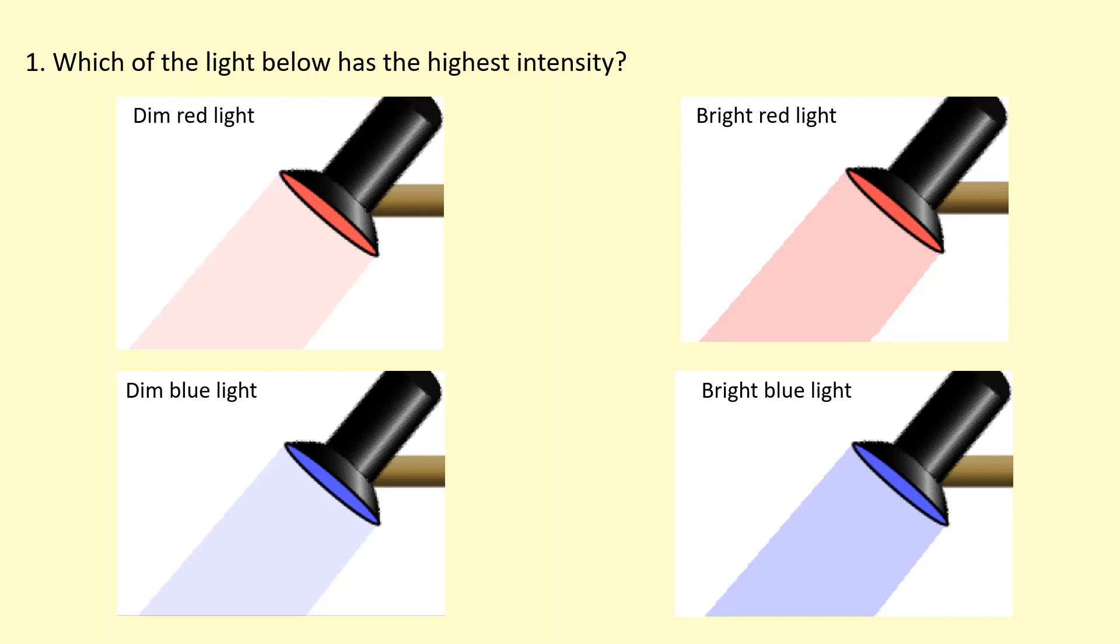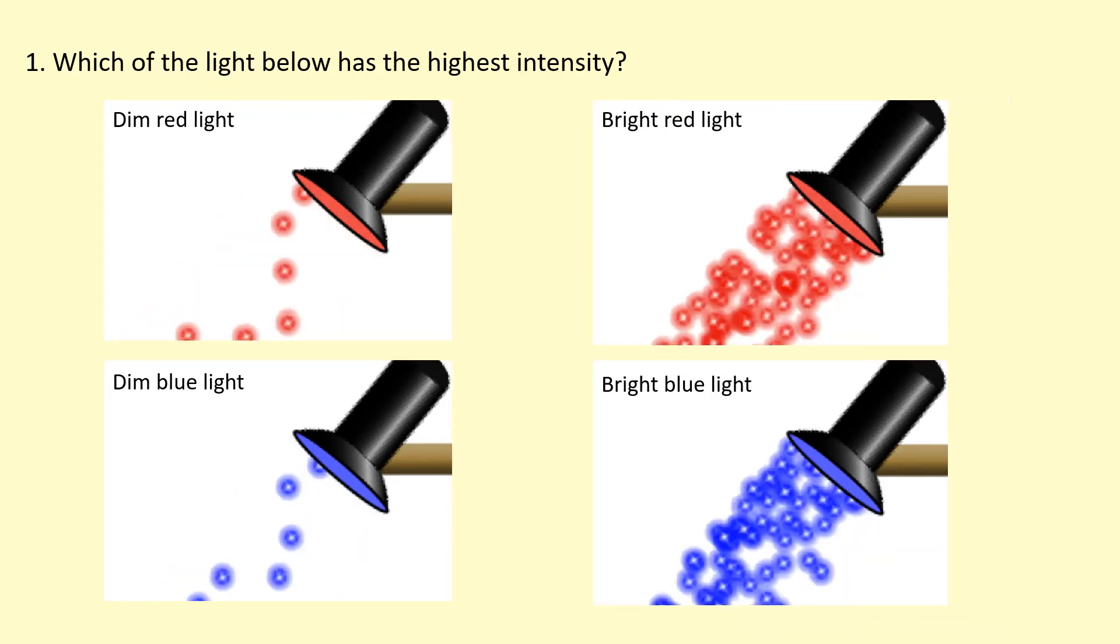So which of the lights below has the highest intensity? As you can see the lights are of different colour and they also have different brightness. To understand what's going on you have to look at it in terms of photons. These pictures help us understand what's going on.